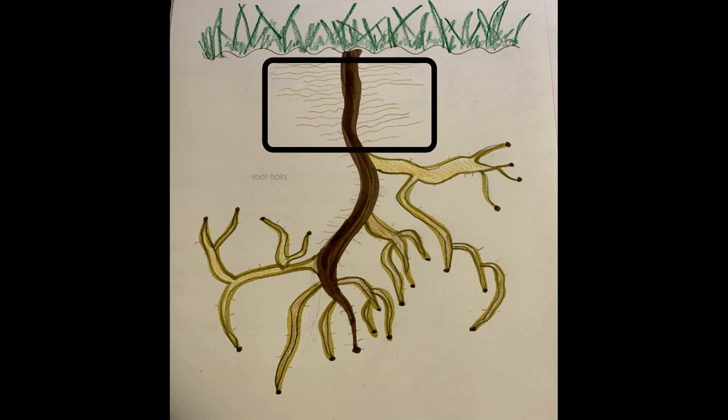Finally, we have root hairs. Root hairs are thin, hair-like outgrowths of a root. They absorb water and minerals from the soil. For most plants, the longest root hairs are on the primary root.